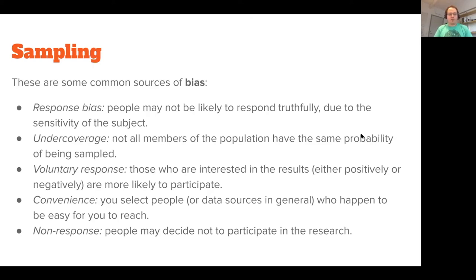In this video I'm going to complement the main lecture with some content that was left out, specifically about how to identify some common sources of bias and some examples of biased samples. We were talking about sampling, which is this method of obtaining a small subgroup from the population and then measuring this subgroup in order to make an inference about the population.